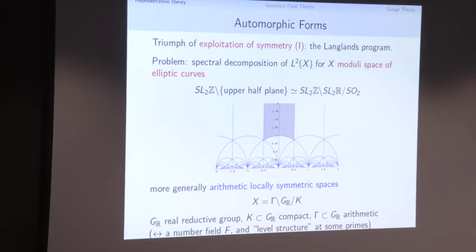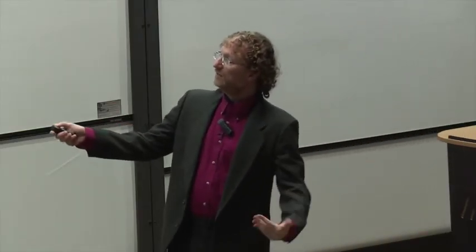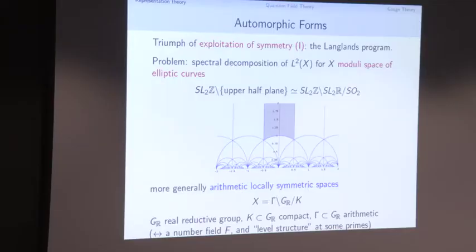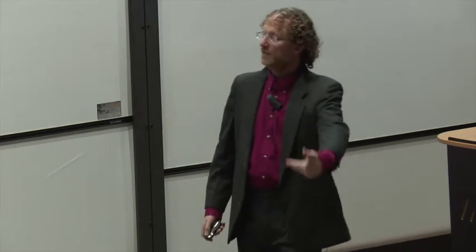This is the general setup for the Langlands program. We want to do harmonic analysis, so we need to figure out what's acting and what we're decomposing with respect to. There are obvious things: the Laplace operator is there, and the group. There's actually a family — a Harish-Chandra family — of higher Casimir operators and higher versions of the Laplace coming from the center of the enveloping algebra. And then there's something more mysterious: for every prime number p, there's another algebra of Hecke operators that also act.